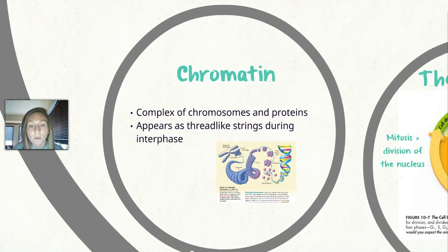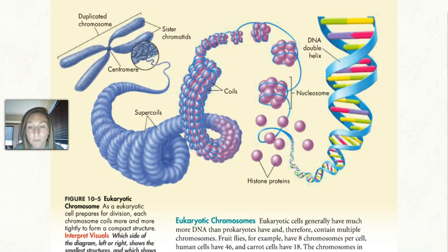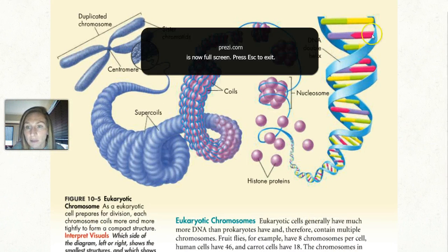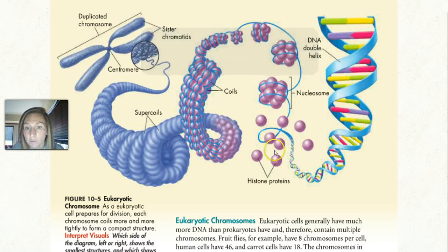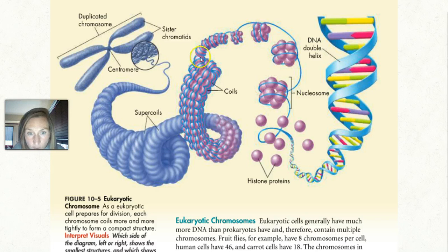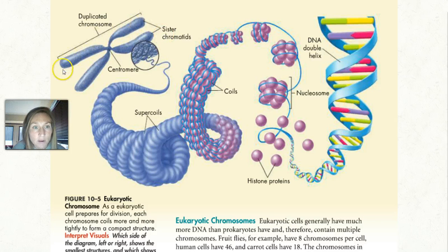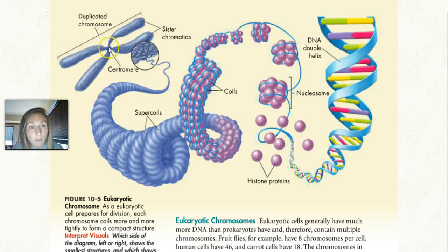Looking at those chromosomes — they are known as chromatin when they appear as thread-like strings during interphase. It's a complex of chromosomes and proteins, which is broken down in this picture from your textbook. If we take our DNA, it will wind around histone proteins and form nucleosome structures — DNA wrapped around the histones. A bunch of those all coiled together and condensed will form a chromosome. Notice that the chromosome is made up of two sister chromatids, meaning they carry the exact same genetic information, and they're held together by the centromere.